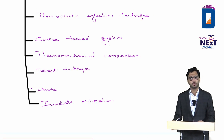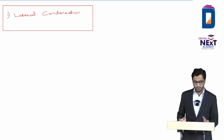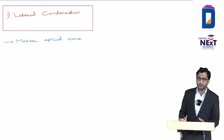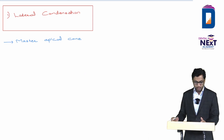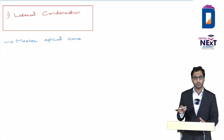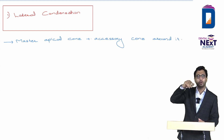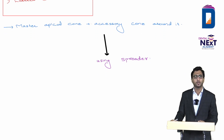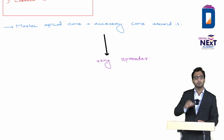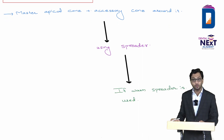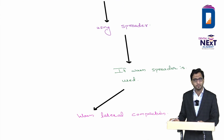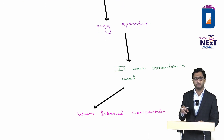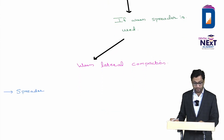The first type is lateral condensation. A master apical cone is placed, then accessory cones are placed around it. Accessory cones are placed by inserting spreaders and condensing laterally. If a warm spreader is used, it is called warm lateral condensation. The spreader is used to condense the cones, and we'll go into more detail shortly.